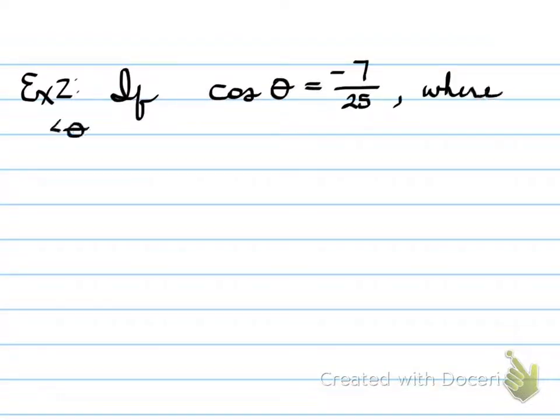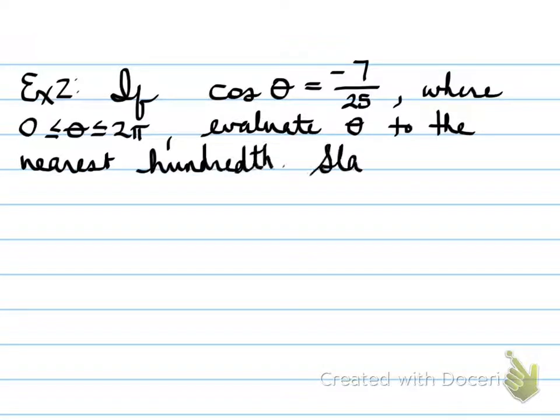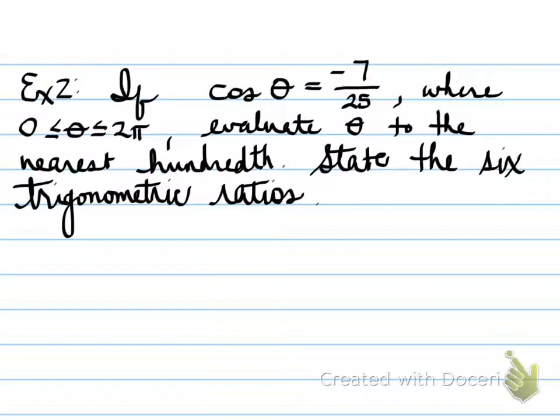Alright, let's move forward. Example 2: if cosine of θ is equal to -7/25, where θ is between 0 and 2π, you're asked to evaluate θ to the nearest hundredth. Also, you're asked to state the 6 trigonometric ratios that apply to this question. So we have cosine, so we'll need sine, cosine, tangent, cosecant, secant, and cotangent.